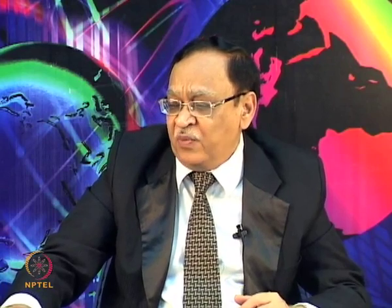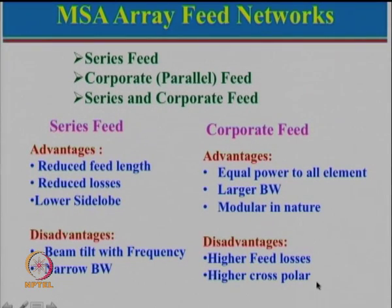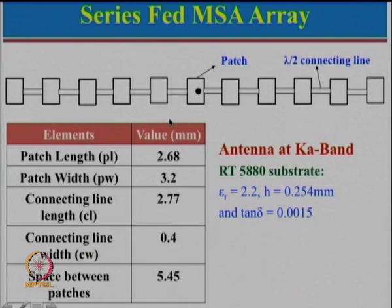Generally, what is done is you take one full module of 32×32 and another module of 32×32 and arrange them in a 2×2 configuration to give a 64×64 array. An external power divider network is used to feed these arrays, so that feed losses on the same substrate can be contained. The disadvantage of corporate feed is the higher feed length causes higher feed losses, radiation from the feed network, higher cross-polarization, and sometimes higher side lobe levels.